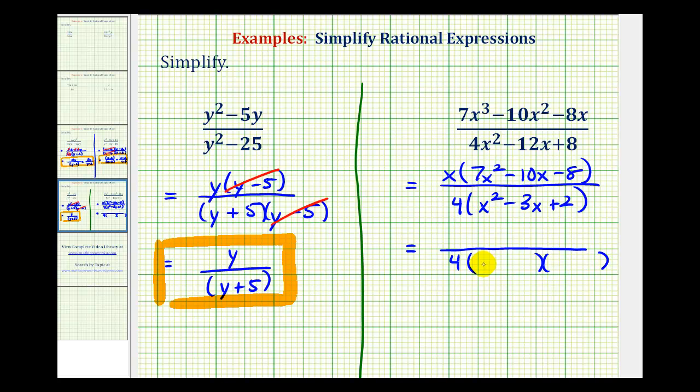The factors of x squared would be x and x. Now we want the factors of positive 2 that add to negative 3, which would be negative 1 and negative 2. So we'll have x minus 1 and x minus 2.